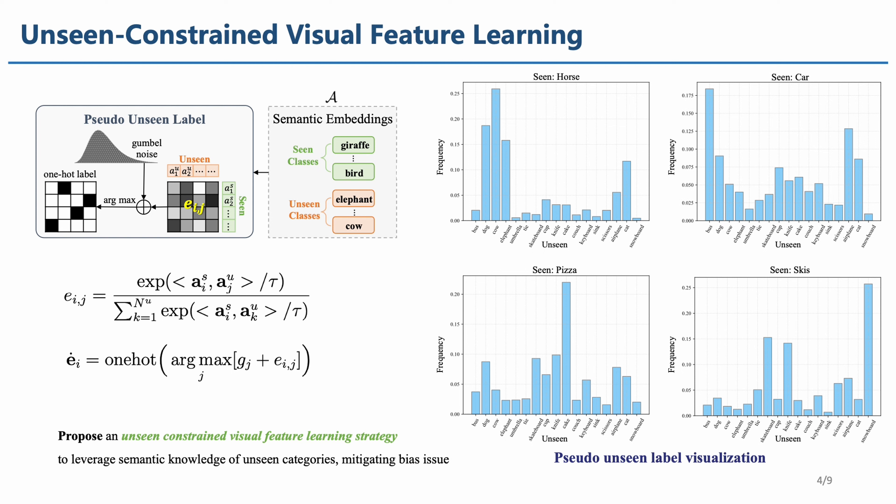The higher the similarity, the greater the weight of the label. For example, in the visualization on the right, for the visible class horse, the most likely categories it will be classified into are dog, followed by sheep, and then elephant. This is consistent with our understanding, as horses are most similar to these classes. This introduces the constraint of unknown classes into the known classes. In the testing scenario, objects will not only be classified into known classes but also into unknown classes, thereby increasing the response to unknown categories.